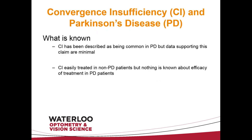What is actually known? Convergence insufficiency has been described as being common in Parkinson's disease, but there's been no data actually supporting that claim. We also know nothing about whether convergence insufficiency could actually be treated in Parkinson's disease — because if it's a neurological issue, exercising might not do anything. On the other hand, generalized exercise seems to be helpful in Parkinson's disease, so possibly these exercises would work as well.